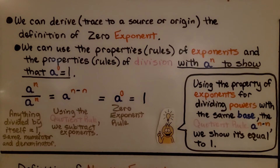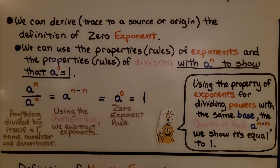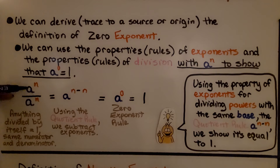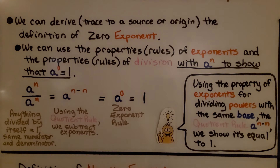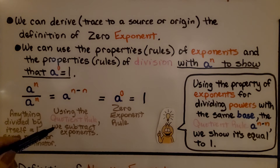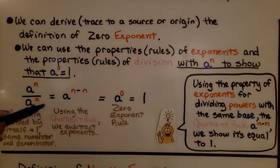We can derive — meaning trace to a source or origin — the definition of zero exponent. We can use the properties and rules of exponents with a to the n power over a to the n power to show that a to the zero power equals one. Anything divided by itself equals one, so that fraction equals one. Using the quotient rule, we subtract exponents: a to the n minus n gives us a to the zero power, and that's the zero exponent rule — it equals one.